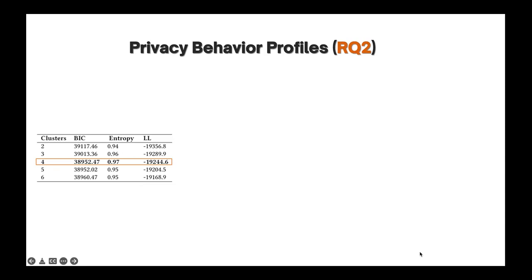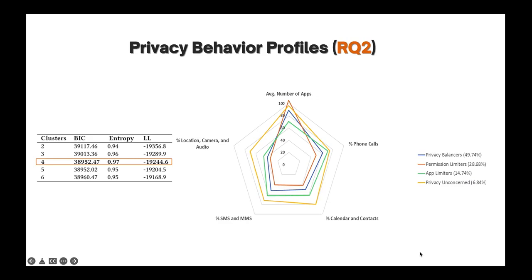For this study, we based our decision on the optimal number of profiles on substantive grounds and the fit measures you can see in this table. The four profile solution was the best based on a minimum level of BIC and a maximum level of entropy. For the privacy profiles, we can start with the privacy balancer group which was a representative of the largest group. The privacy balancers practiced a moderate level of privacy management for both behaviors: apps installation and permission granting. Permission limiters had the highest number of installed apps on their devices; however, they granted the least number of permissions for all categories of dangerous permissions. While app limiters installed the least number of apps on average, they had a moderately high level of granting permissions behavior. The privacy unconcerned showed generous granting behavior for all permissions and had the second highest average number of installed apps.